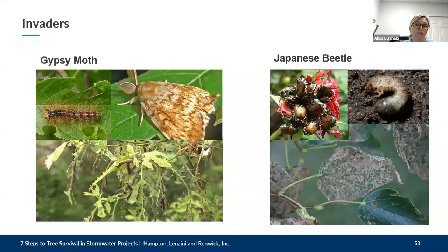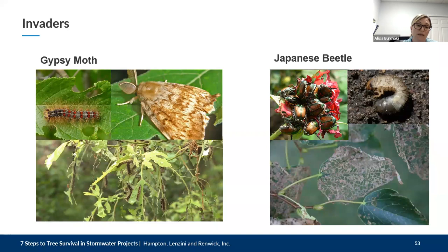The Japanese beetle feeds on over 300 species of ornamental plants. As a side note, I actually worked for an entomologist at the Morton Arboretum in college for two summers. We did a leaf preference study, putting beetles in containers with tree leaves to determine their preference based on what they ate and whether they laid eggs in the container. It was a very interesting two summers.